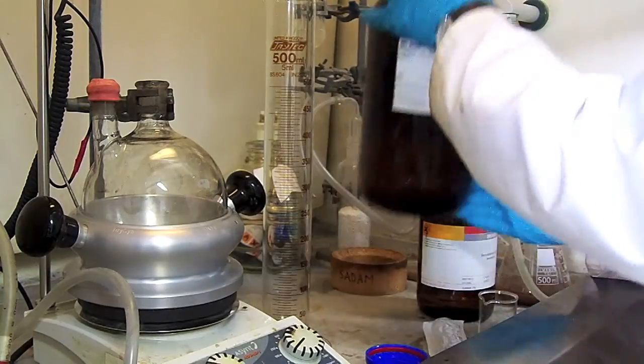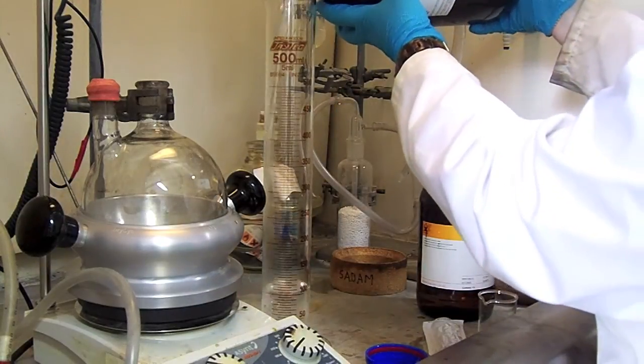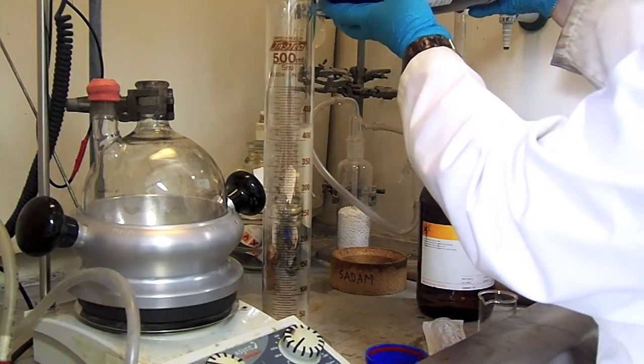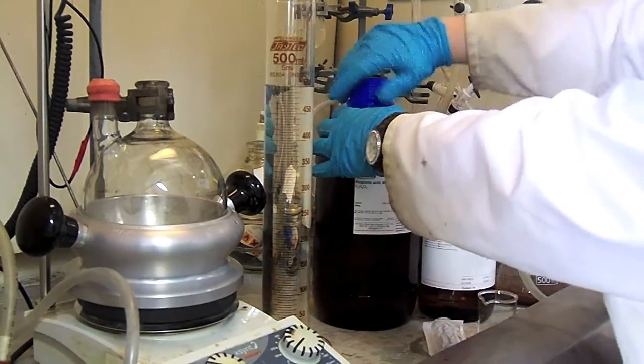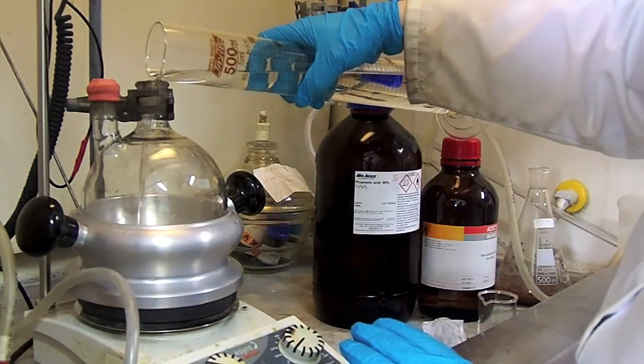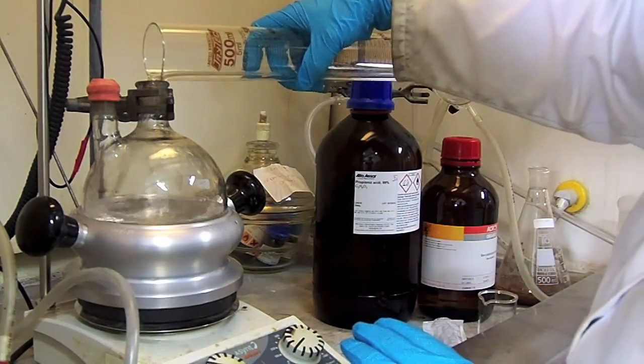Firstly, you need to add your 500 ml of propionic acid. This is important to do in the fume hood as it smells extremely bad. Add this to your cold reaction flask using a funnel if necessary.